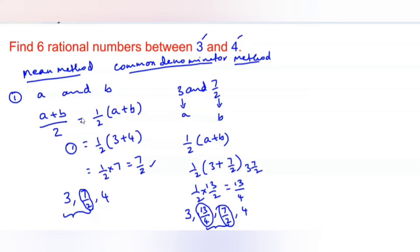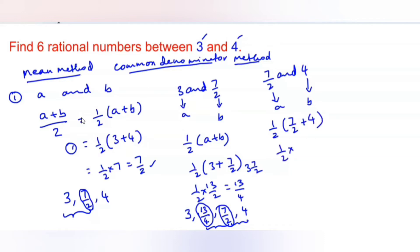Following the same method we can also find one more rational number between 7 by 2 and 4. Taking this as a and 4 as b, we get half into 7 by 2 plus 4, which is half into 15 by 2, giving 15 by 4. So our rational numbers are now 3, 13 by 4, 7 by 2, 15 by 4, and 4 — that is three rational numbers found between 3 and 4.